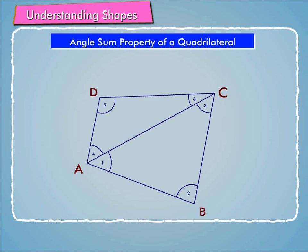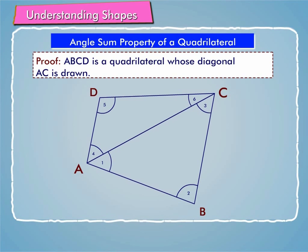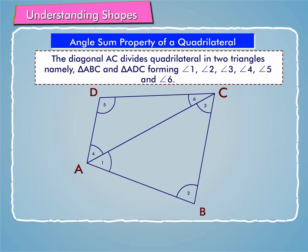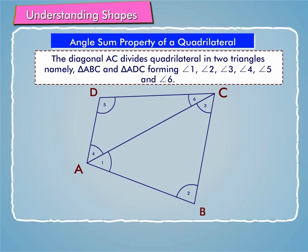The angle sum property of a quadrilateral can be proved as follows. In the figure given on screen, ABCD is a quadrilateral whose diagonal AC is drawn. The diagonal AC divides the quadrilateral into two triangles, namely triangle ABC and triangle ADC, forming angle 1, angle 2, angle 3, angle 4, angle 5, and angle 6.